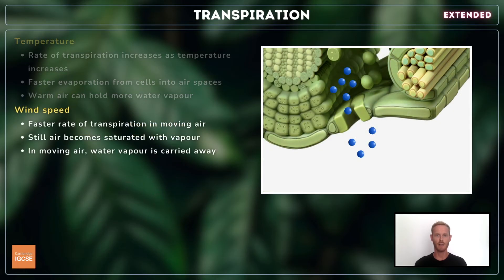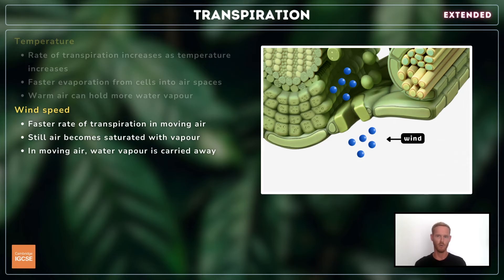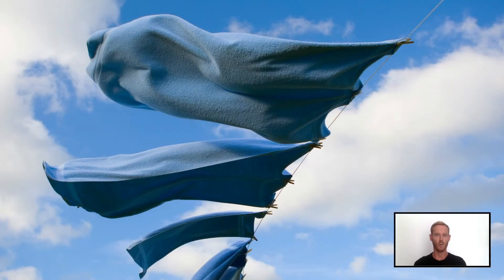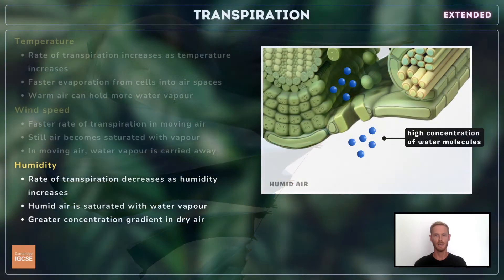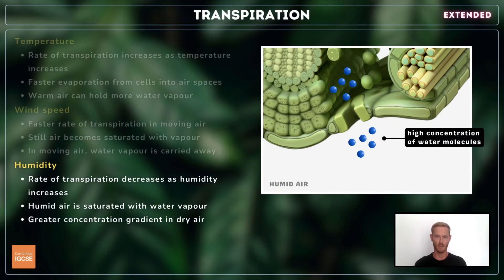In still air, the region surrounding the leaf becomes saturated with vapour and can accept little more from the air spaces. Conversely, in moving air, water vapour is carried away from the leaf as soon as it diffuses out. This helps to maintain a steep concentration gradient, speeding up the rate of transpiration — it's also why your clothes dry faster on a windy day.